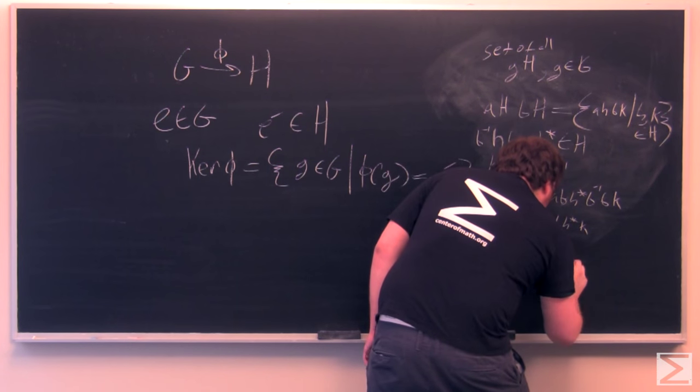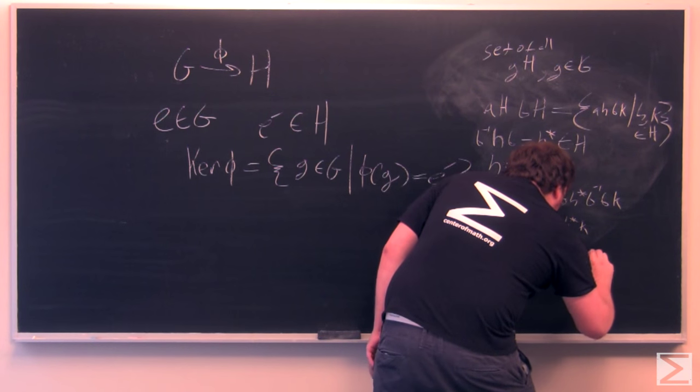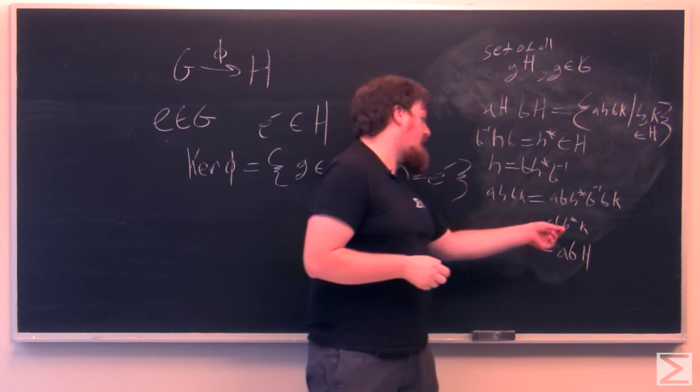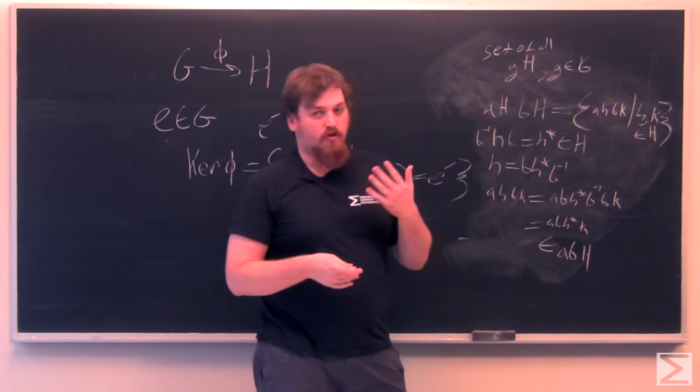And this is in the coset ABH, where AB is the product of A and B. Because H star K, those are both in H, and so their product must be in H.